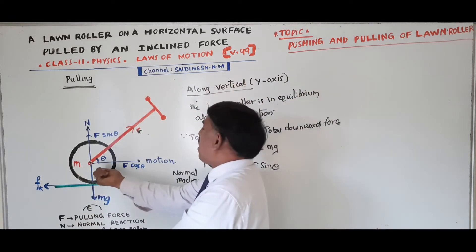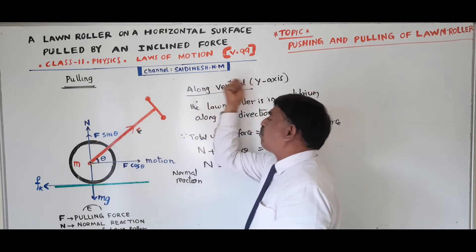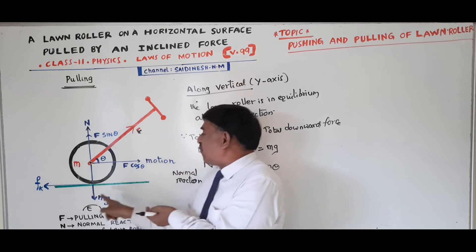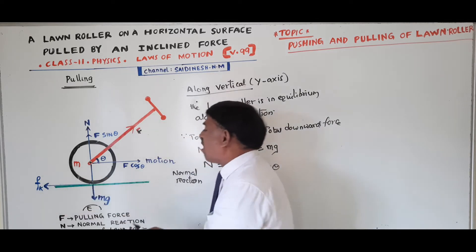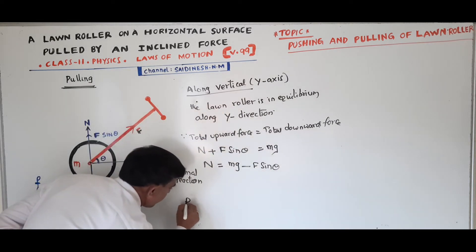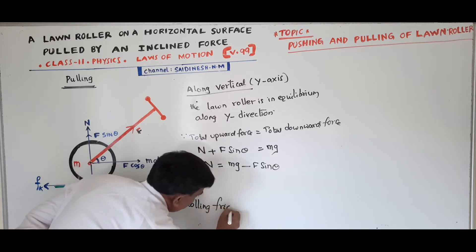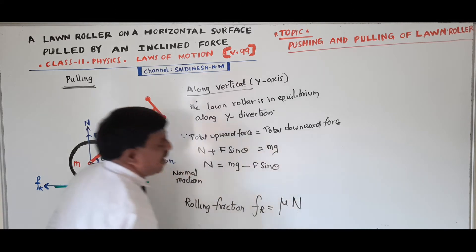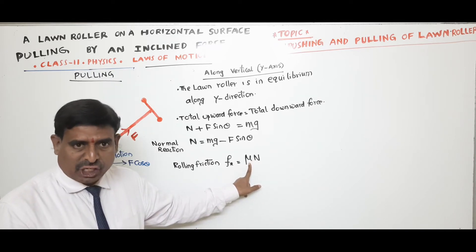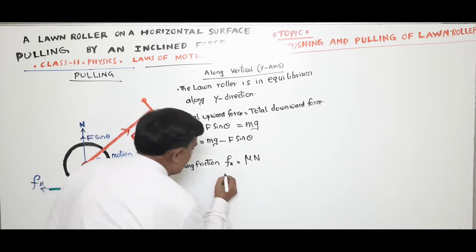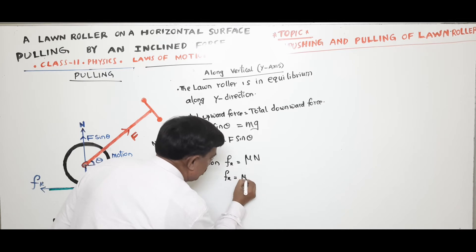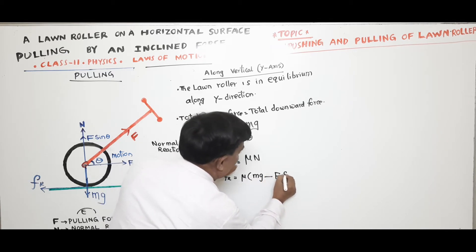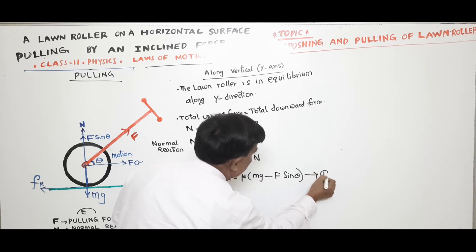When we are pulling the land roller, the rough surface opposes the motion. The rolling frictional force equals mu into N, where mu is the coefficient of friction and N is the normal reaction. So frictional force F_r equals mu into (mg minus F sin theta). This is equation 1.